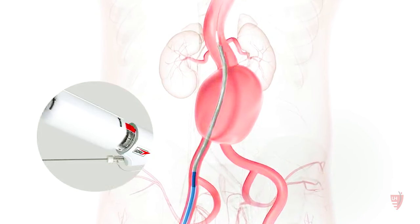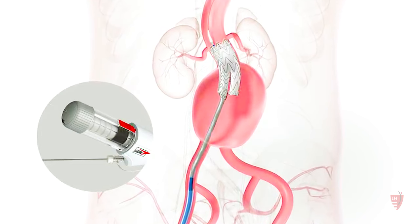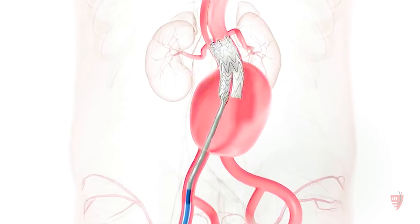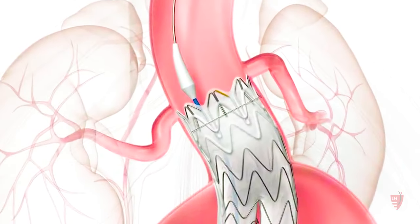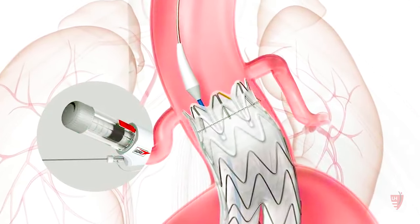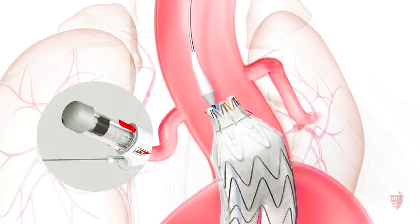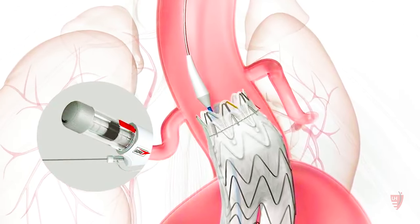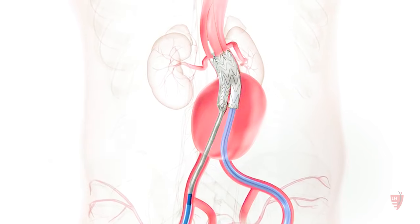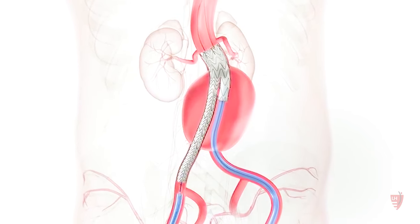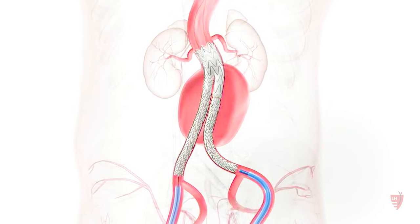The other method is to go through the groin. We access the blood vessel in the groin with a needle, then pass a wire, and over the wire we deliver a stent graft. The stent graft is constrained in a sheath, and once we relieve the sheath, the stent graft opens up. By deploying the stent graft above and below the aneurysm, it excludes blood flow into the aneurysm sac.